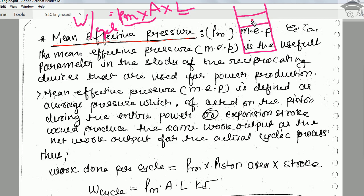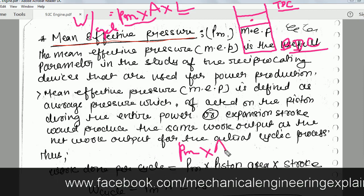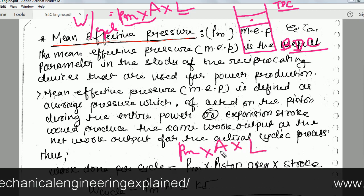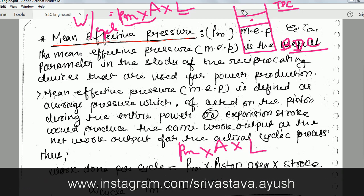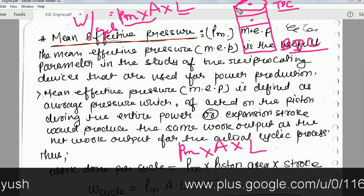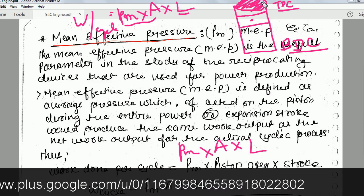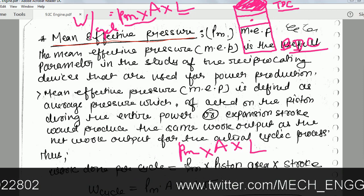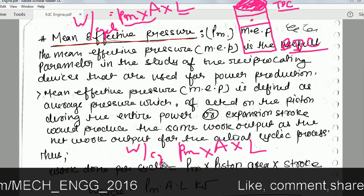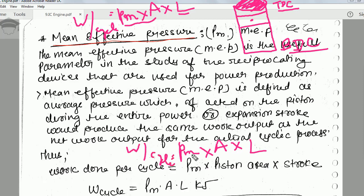The stroke length is the travel of the piston from the top dead center (TDC) to the bottom dead center (BDC). If you haven't watched my engine terminology video, click the eye icon on the top right corner to become familiar with terms like stroke, TDC, and BDC. So work done per cycle equals Pm into piston area A into stroke length L, where area A equals π/4 × d². From this formula, Pm equals work done per cycle divided by area into stroke length.